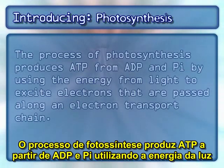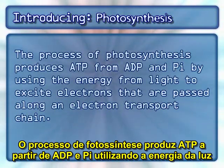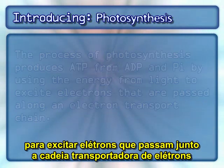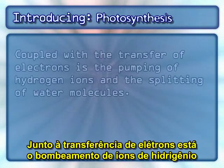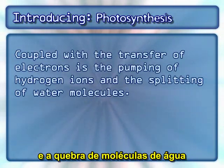The process of photosynthesis produces ATP from ADP and PI by using the energy from light to excite electrons that are passed along an electron transport chain. Coupled with the transfer of electrons is the pumping of hydrogen ions and the splitting of water molecules.